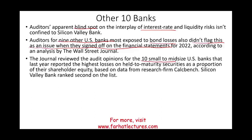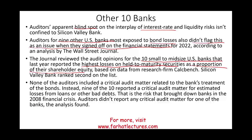The journal reviewed audit opinions for 10 small to mid-sized US banks that reported the highest losses on held-to-maturity securities as a proportion of shareholder equity. Silicon Valley ranked second on this list. None of the auditors included a critical audit matter related to the bank's treatment of the bonds, because the issue was not raised. Instead, nine of the ten reported CAMs for estimated losses on loans and other bad debt — that was the risk that brought down banks in the 2008 financial crisis.